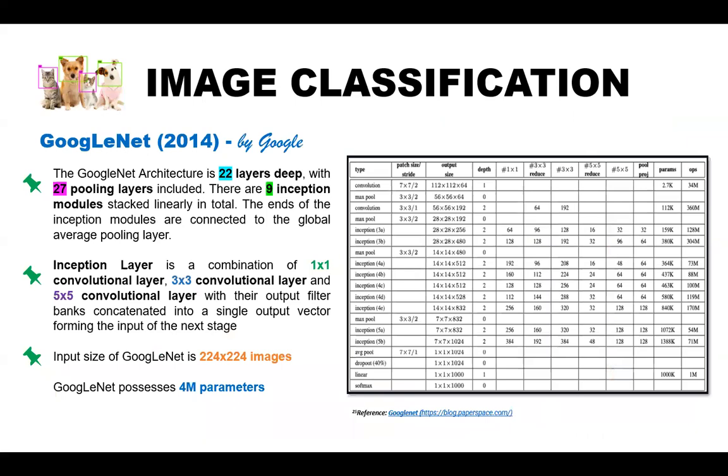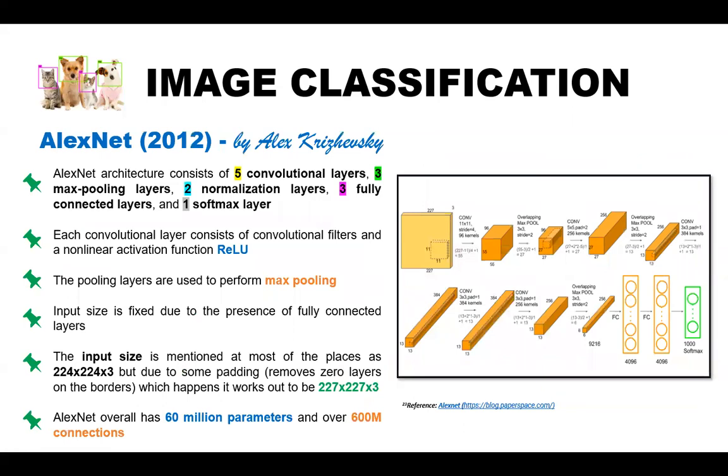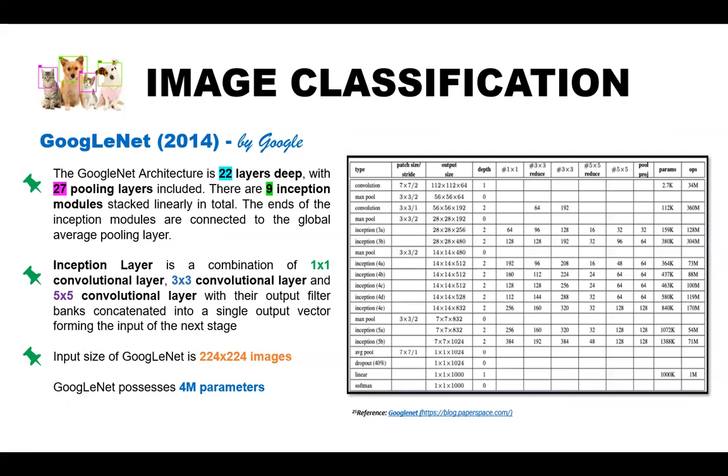Now, moving on to our next sample CNN, we have the GoogleNet. Displayed on the screen are some of the notable features of GoogleNet, which made it unique from the rest of the available CNNs and also compared with AlexNet. GoogleNet is a 22-layer deep, 27 pooling layers included, and there are nine inception modules. This shows that GoogleNet is a bit intricate or higher versus AlexNet because AlexNet only has five convolutional layers and three max pooling layers, though we have 22 layers deep here in GoogleNet, 27 pooling layers.